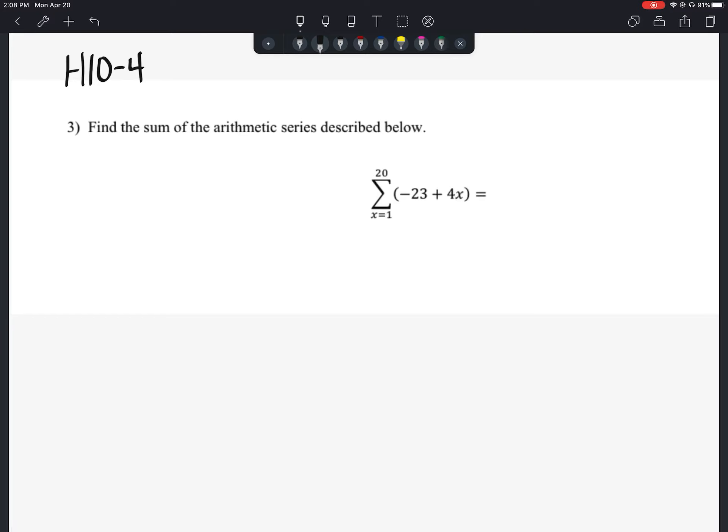What this is saying to us here is we're finding the sum. Anytime you see this, that means you're finding the sum of something. So we're going to find the sum from the first term to the 20th term of the series that's generated using that rule right here.